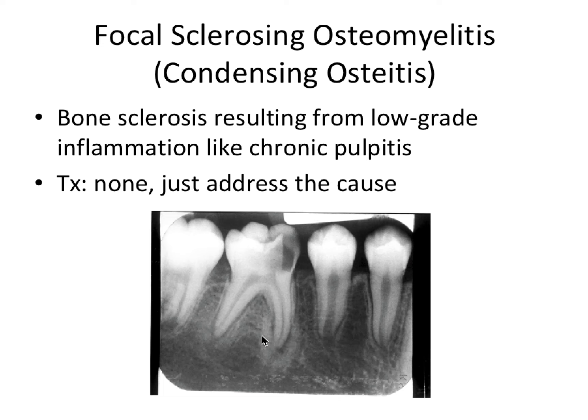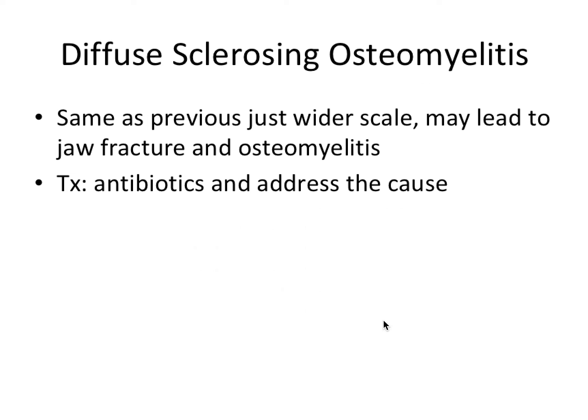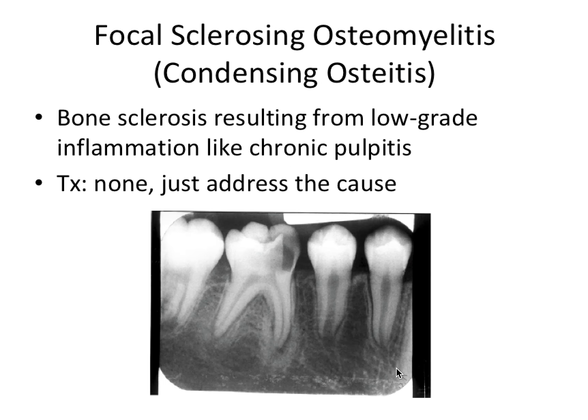There's also a diffuse form of sclerosing osteomyelitis — basically the same as condensing osteitis but on a wider scale, which could lead to jaw fracture and osteomyelitis. Treatment is again to address the cause. Condensing osteitis is the really important one to know for the exam.